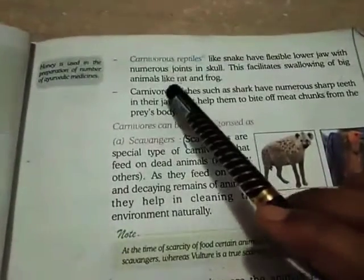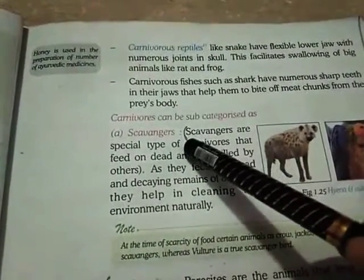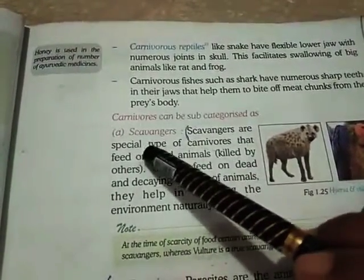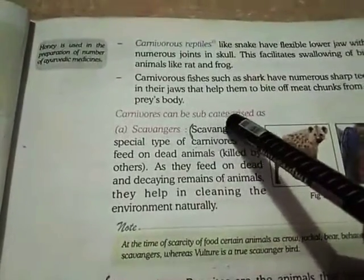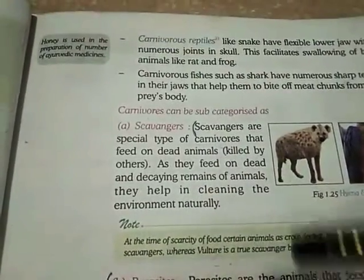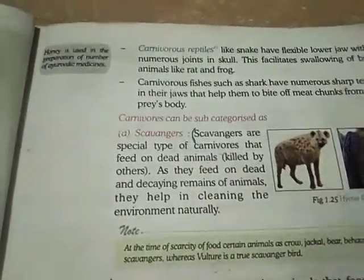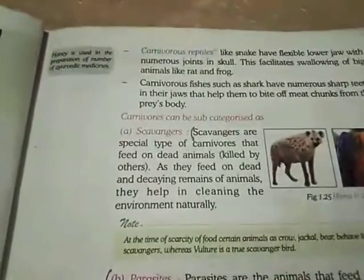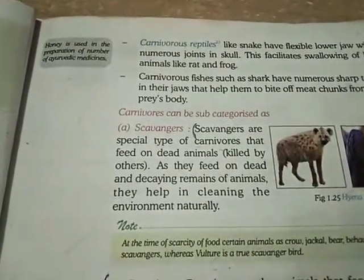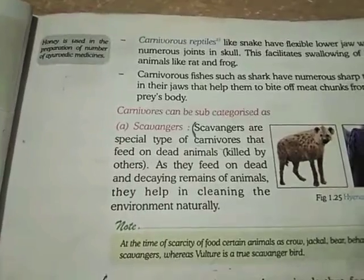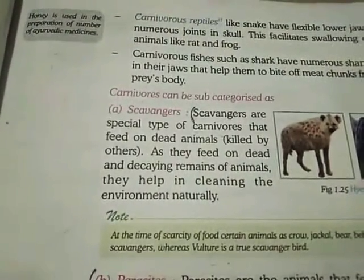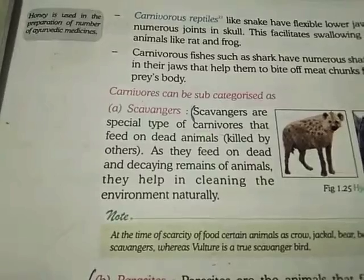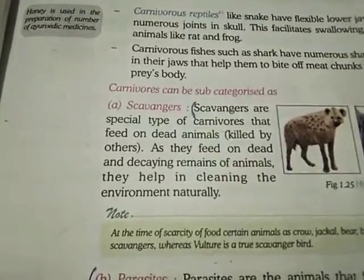Carnivores have two sub-categories. The first is scavengers. Scavengers are a special type of carnivore that feed on dead animals — they eat the dead animals and help clean the environment and nature.